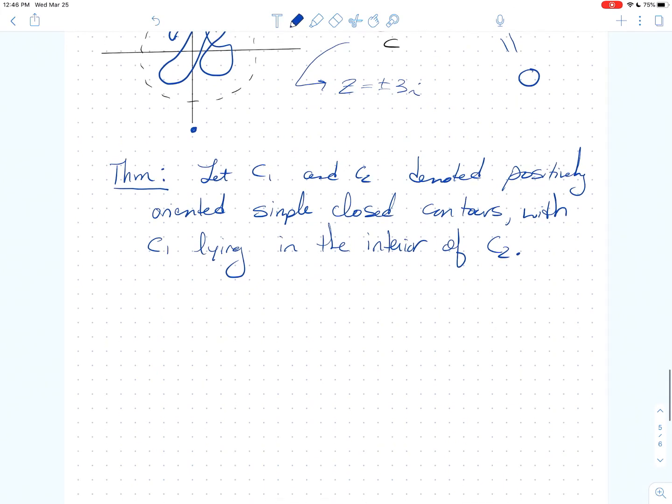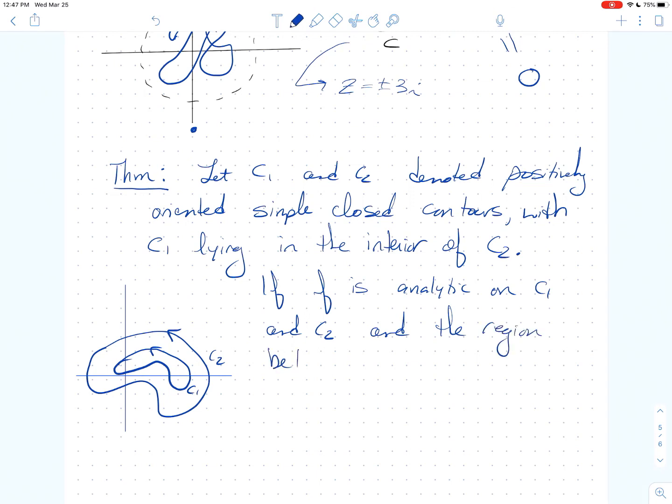And I want to assume that C1 lies in the interior of C2. Alright, so let's just off to the side draw a little picture. What are we talking about? So maybe I've got something like this. So here's, I want to be positive, so I'm going counterclockwise. Here's C2. And then maybe here is my C1. Alright, and so the next part of the theorem says if F is analytic on C1 and C2, so on the curves themselves and the region between, then in fact the integral of F over the big curve C2 is the same as the integral of F over the smaller curve C1.